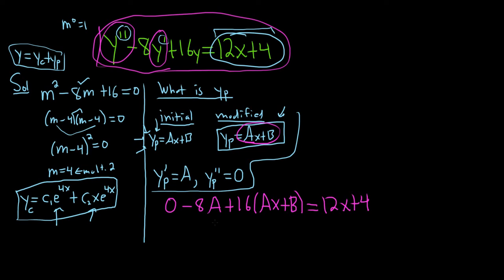Let's keep going. This is negative 8a plus 16ax plus 16b, and that's equal to 12x plus 4.